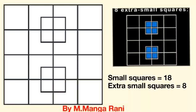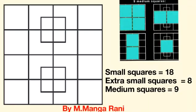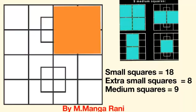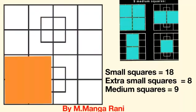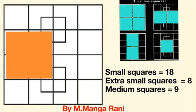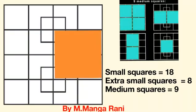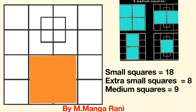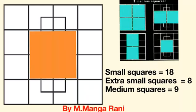Now, let us count medium squares. Medium squares are total 9. 1, 2, 3, 4, 5, 6, 7, 8 and 9.